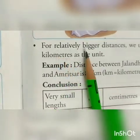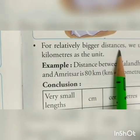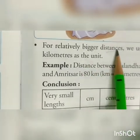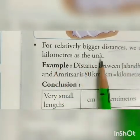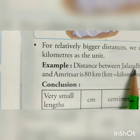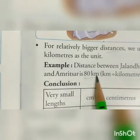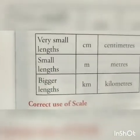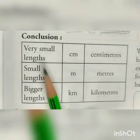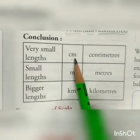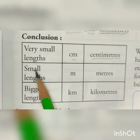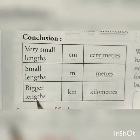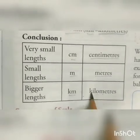For relatively bigger distances, we use kilometer as the unit. For example, the distance between Jalandhar and Amritsar is 80 km — km stands for kilometers. In conclusion: very small lengths are measured in cm (centimeter), small lengths are measured in m (meter), and bigger lengths are measured in km (kilometer).